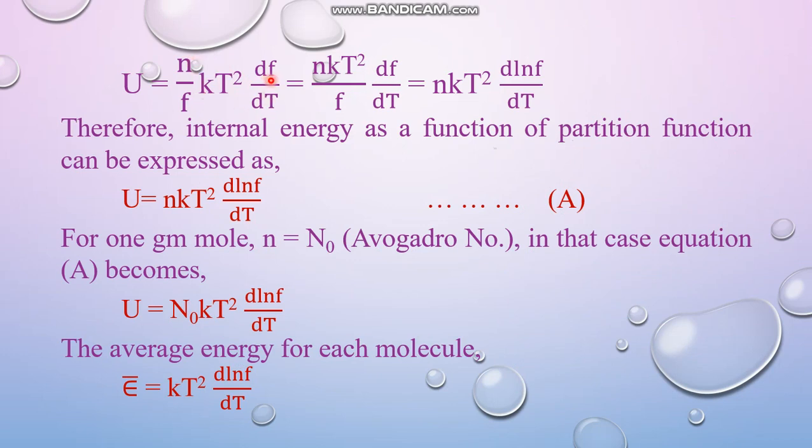So what is the value of the summation part? Now it is kT squared dF by dT. So the ultimate expression is NkT squared by F dF by dT. Now if this F is merged with dF then it becomes dF by F and this is nothing but d ln F. So the final expression of U is NkT squared d ln F by dT.